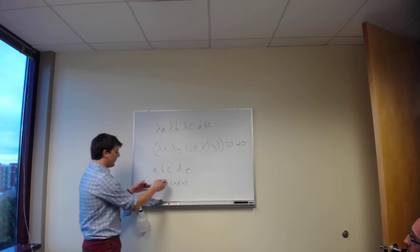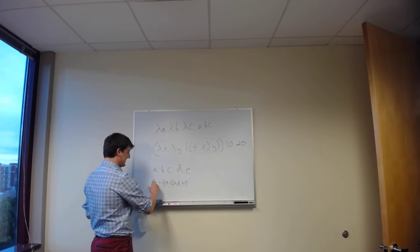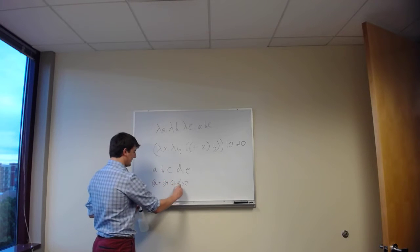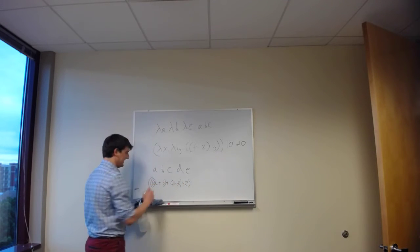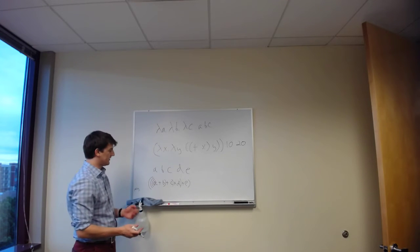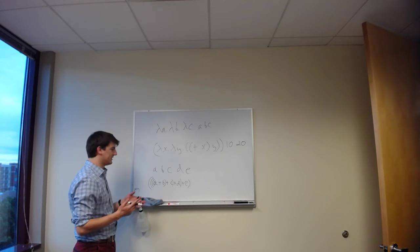So that would be here, we'd say we first do A plus B. The result of that, we're going to add to C. The result of that, we're going to add to D. And then finally, the result of that, we add to E. So that's just left associativity. That's the general, what that is.